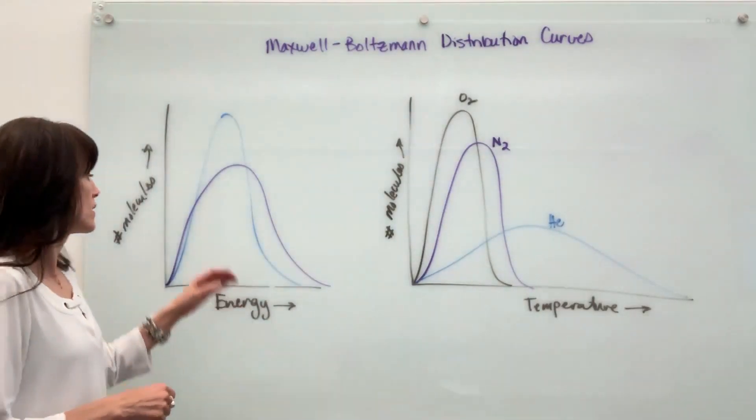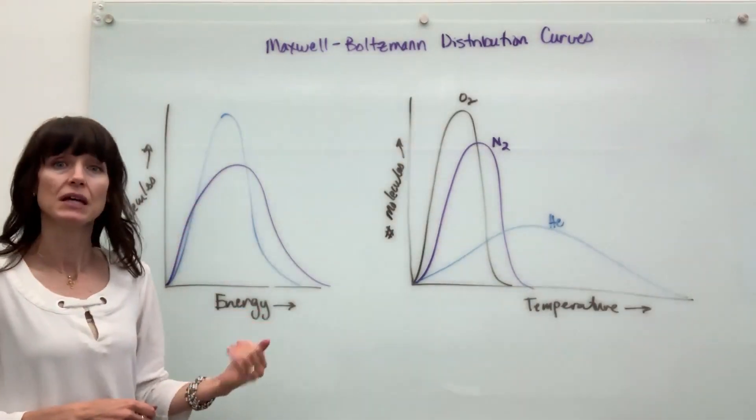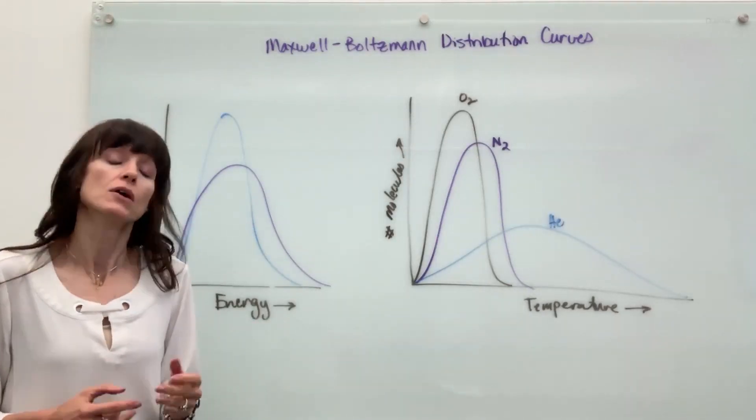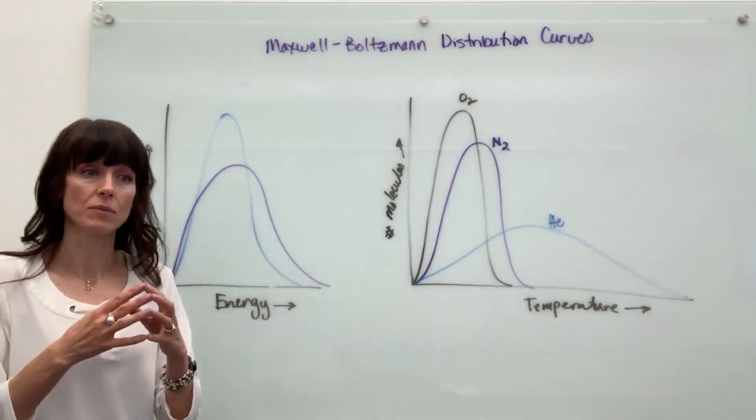Here's the main thing that you need to know. For these curves, the area under the curve is the same. Area under the curve is the same, which means we have the same number of atoms.